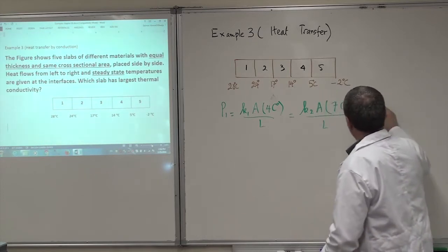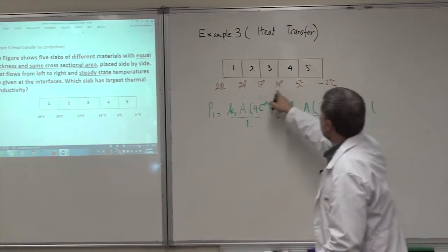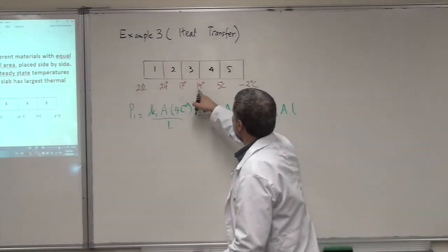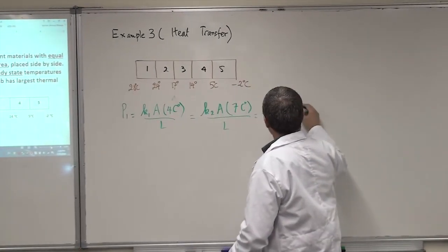Equal K3. You keep doing this. Area, how much is delta T here? 17, this is 3. C degree. Over L.